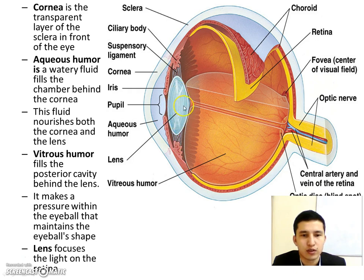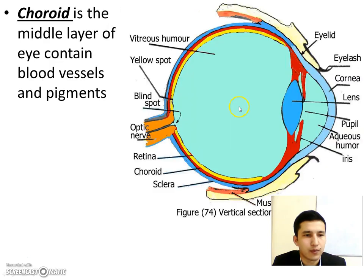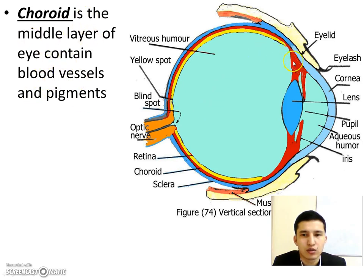The lens focuses the light onto the retina. The second layer is the choroid, which is the middle layer of the eye and contains blood vessels and pigments.